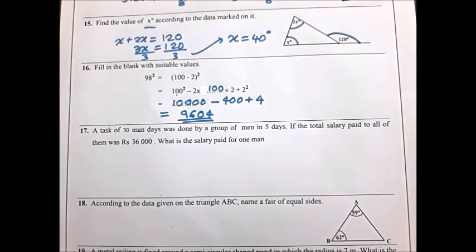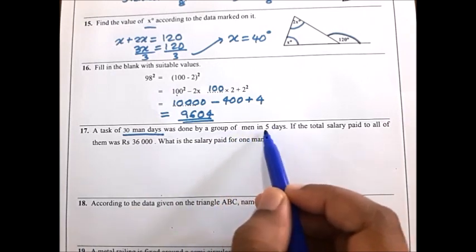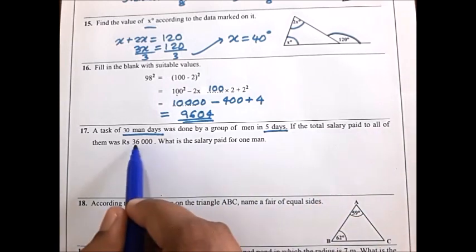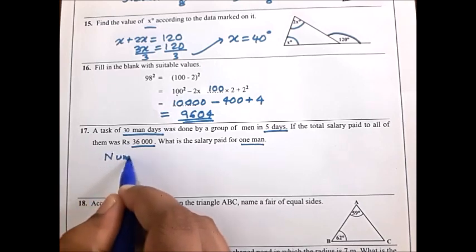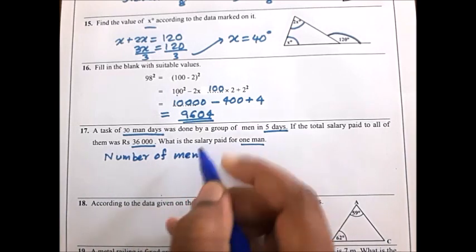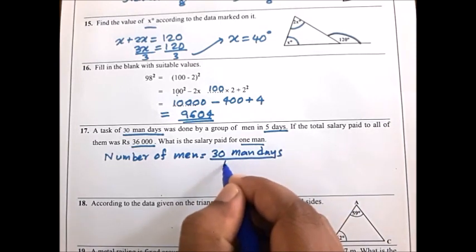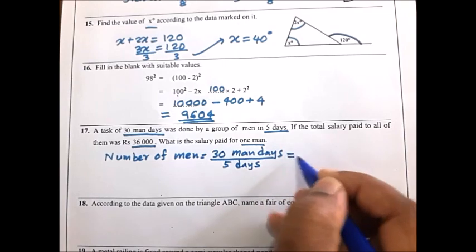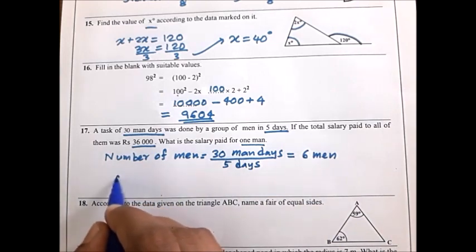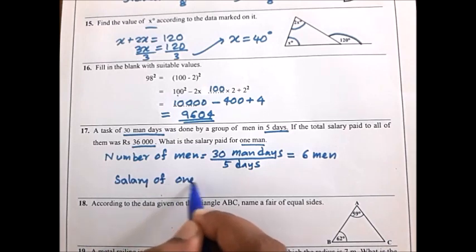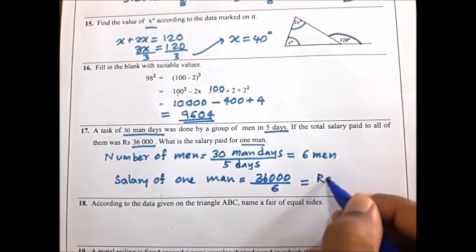Let's start the 17th question. A task of 30 man-days is done by a group of men in 5 days. If the total salary is 36,000, what is the salary for 1 man? First find the number of men: divide 30 man-days by 5 days to get 6 men. Then 36,000 divided by 6 equals 6,000 rupees per man.